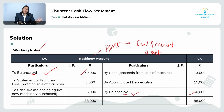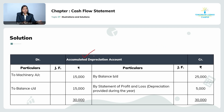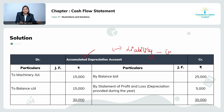When accumulated depreciation is given, you have to prepare a ledger account for it. Accumulated depreciation is deducted from the fixed asset account, so it can also be written on the liability side, and liabilities have a credit balance. Therefore, the opening balance of accumulated depreciation will come on the credit side.